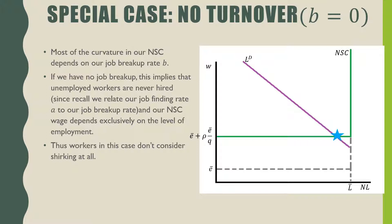This is because as shown in the previous video, our job finding rate is dependent on the job breakup rate. In this case, workers don't shirk at all because if you lose your job you lose it for good. That's a risk not worth taking because being employed is strictly preferred to being unemployed, and the value of shirking is less than the value of not shirking.